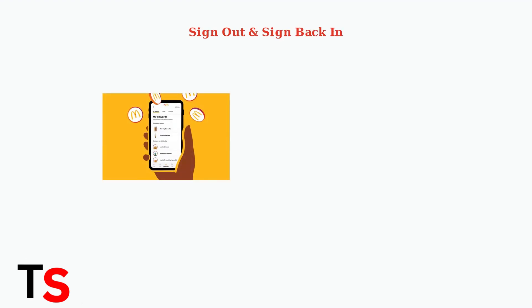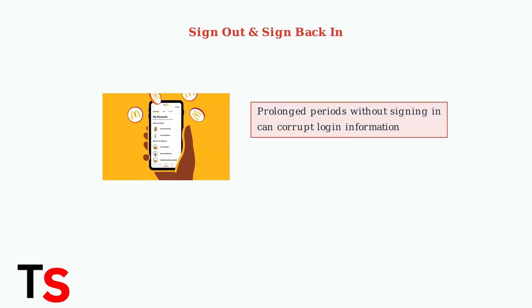When basic troubleshooting fails, advanced solutions can resolve persistent login issues. The first step is signing out completely and then signing back into your McDonald's app. Prolonged periods without signing in can corrupt your login information stored in the app. This corruption prevents successful authentication with McDonald's servers.